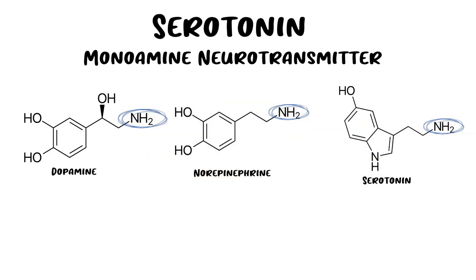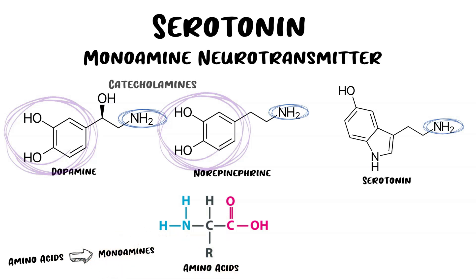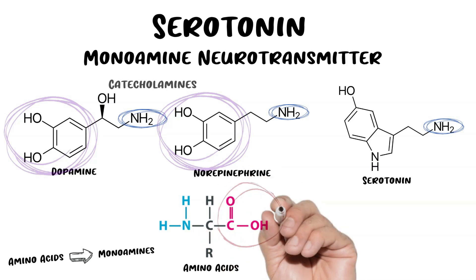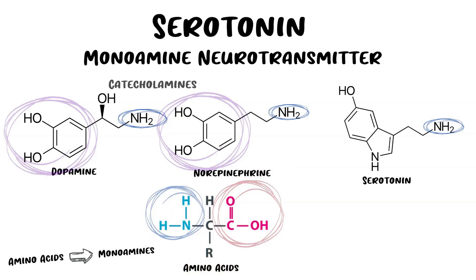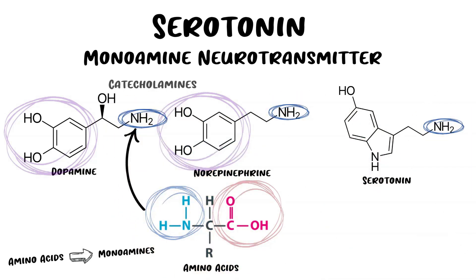A quick tangent: dopamine and norepinephrine are catecholamines because they contain a catechol, which is the benzene ring with two hydroxyl groups. The key takeaway is that monoamines are derivatives of amino acids, meaning amino acids are converted into monoamine neurotransmitters. Amino acids contain both a carboxyl group and an amino group, but looking at monoamine neurotransmitters, they all contain the amino group and none contain the carboxyl group.